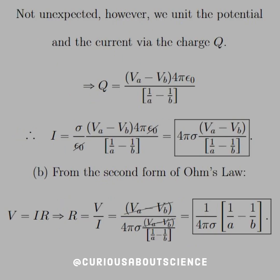So not totally unexpected, however, we unite the potential and the current via the charge. So let's solve the potential difference for the charge Q, and we do that algebra, and then we plug it into the equation for I, and we see instantly a lot of things canceling. So then we simplify this to 4 pi sigma VA minus VB over 1 over A minus 1 over B. So you kind of see here that the current is related to V, but how?